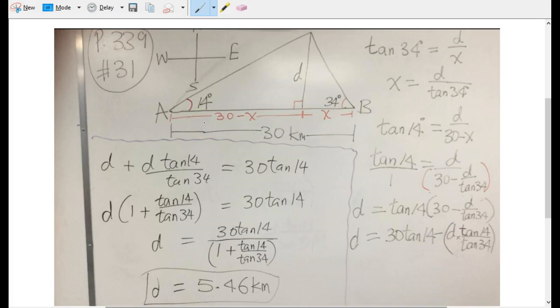Then we can use trig ratios to set up. We know angle 34 is going to be opposite over adjacent. The right angle is here so this side is hypotenuse.